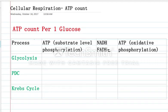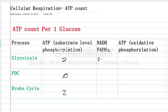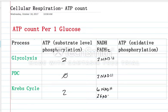Let's do the count. Glycolysis produces two ATPs at substrate-level phosphorylation — direct cash. The pyruvate dehydrogenase complex produces no ATP. The Krebs cycle produces two ATPs. All of that is per glucose. Glycolysis produces two NADHs, PDC produces two NADHs, the Krebs cycle produces six NADHs, and two FADH2s. Again, that is the count per glucose, not per acetyl-CoA.